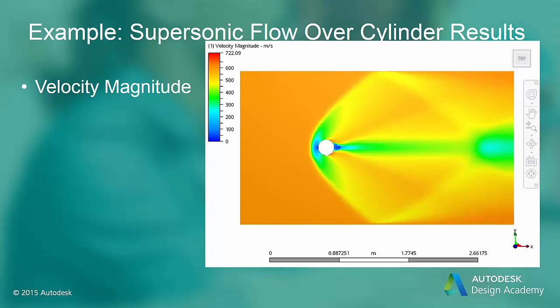For incompressible flow, the flow decelerates in this region. For compressible flow, flow accelerates in this area. The velocity magnitude also shows the reflection of the oblique shock at the freestream boundaries.